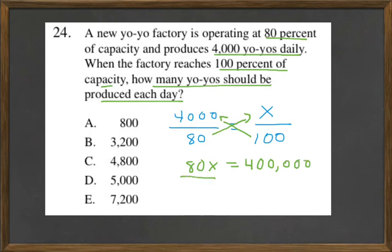Then divide by 80 to get x by itself. x equals 5,000. The answer is D.